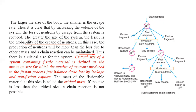Thus, there is a critical size of the system. The critical size of a system containing fissile material is defined as the minimum size for which the number of neutrons produced in the fission process is just balanced by those lost by leakage and non-fission capture. The mass of fission material at this size is called the critical mass. If the size is less than the critical size, the chain reaction cannot proceed.